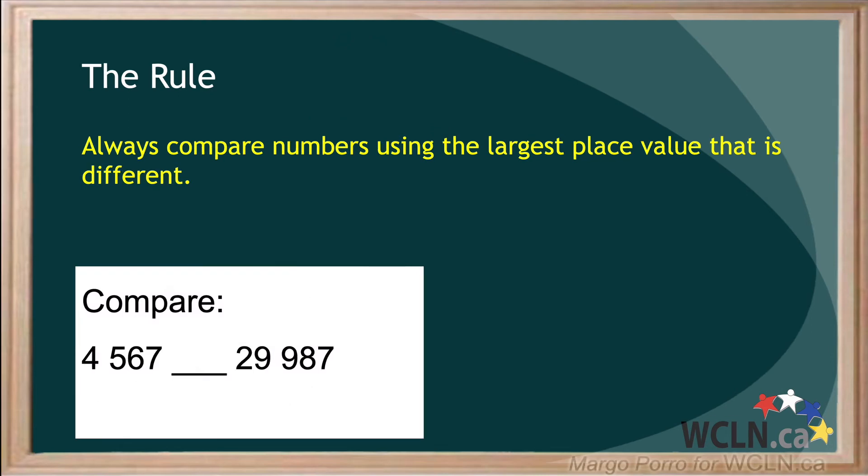Using the rule, always compare numbers using the largest place value that is different, isn't always as straightforward as the numbers we've looked at so far. Take a look at this example. Which is the first digit that is different? At a quick glance, you might be thinking the first digit,